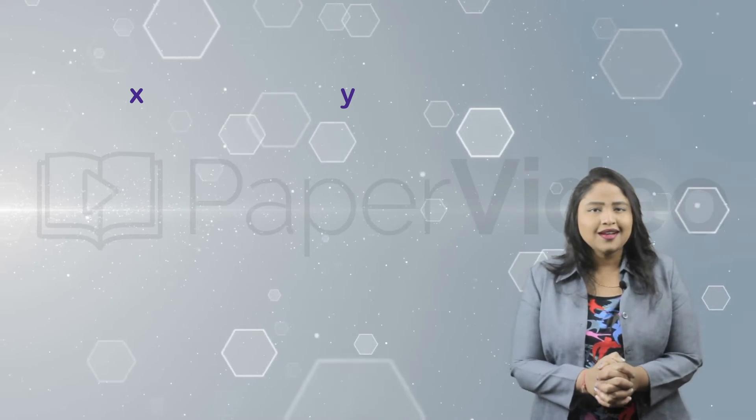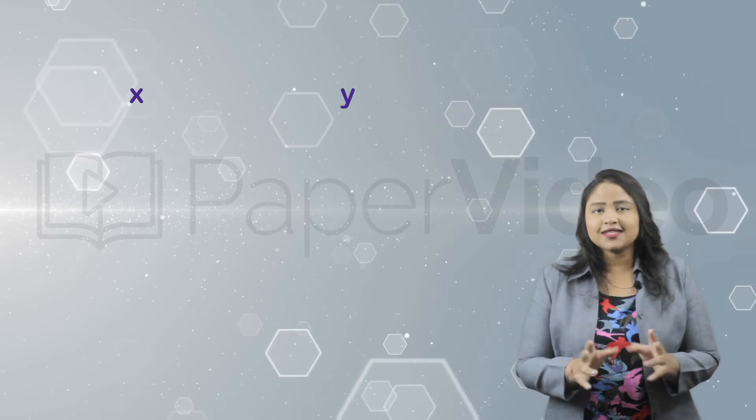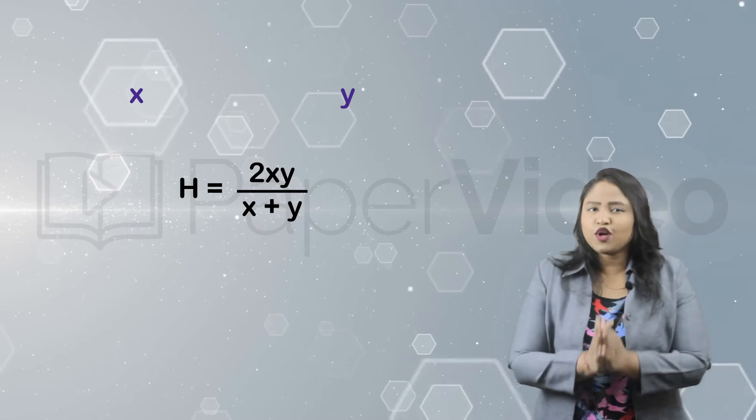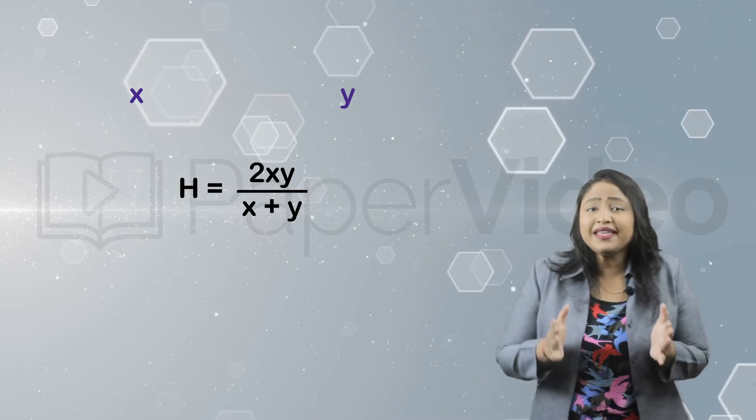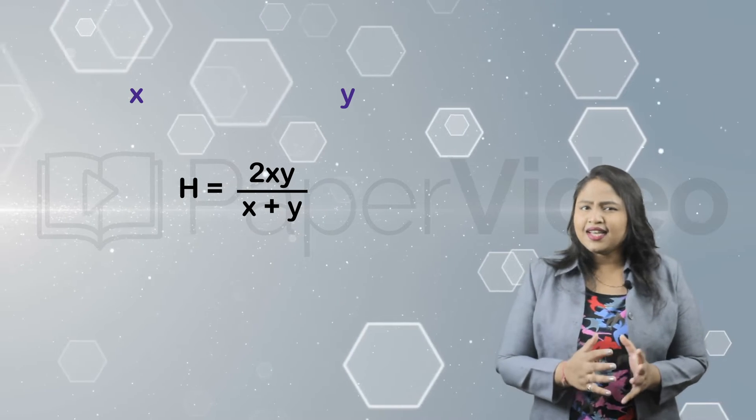Harmonic mean: suppose we are given two numbers, say x and y, then how do we find their harmonic mean? The harmonic mean of two numbers is twice their product divided by the sum, calculated like this: H = 2xy/(x + y).